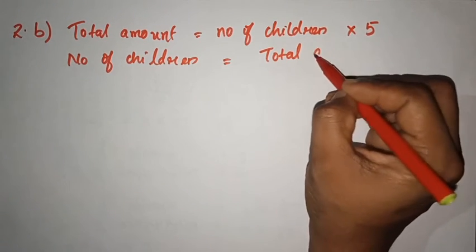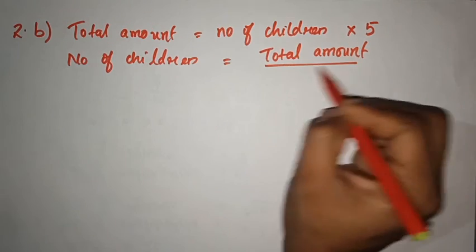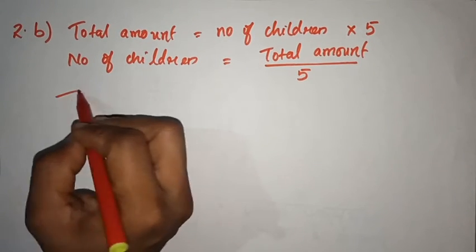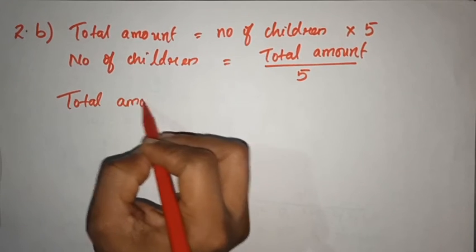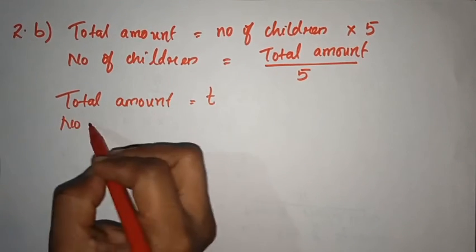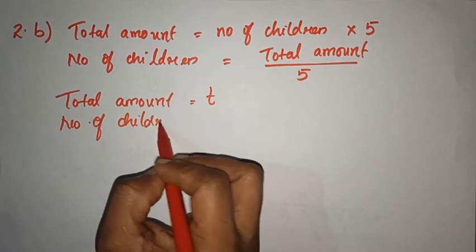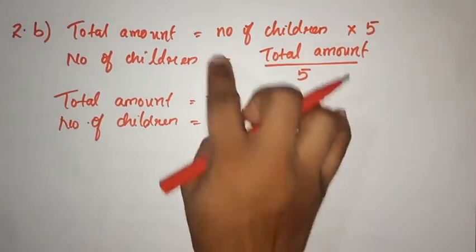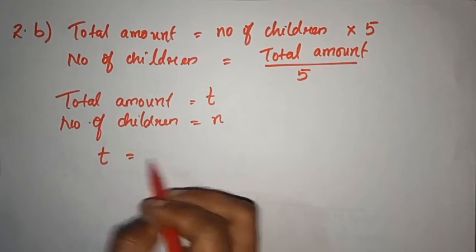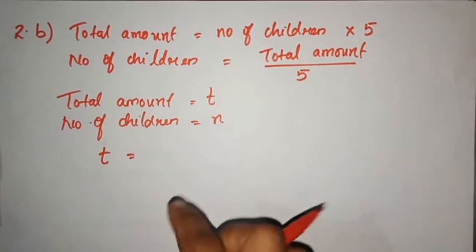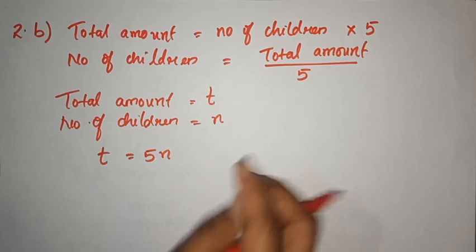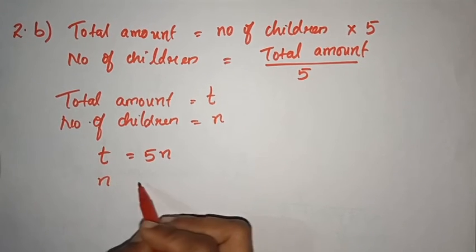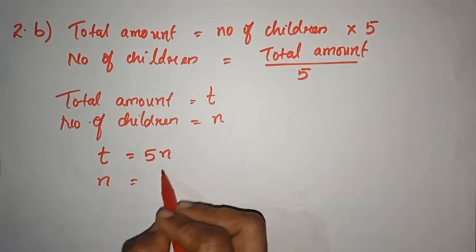Yes, that is the total amount — 5. What is the number of children? What letter do we use for total amount? What letter for number of children? N is equal to total amount T divided by 5.